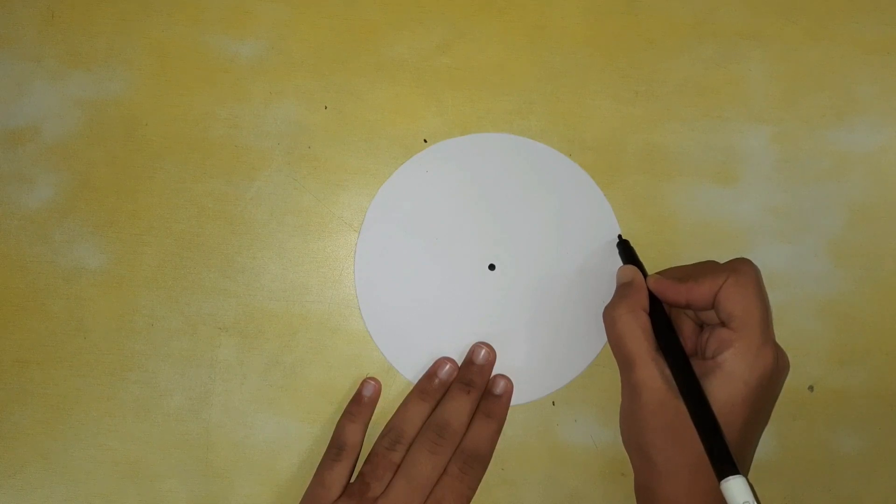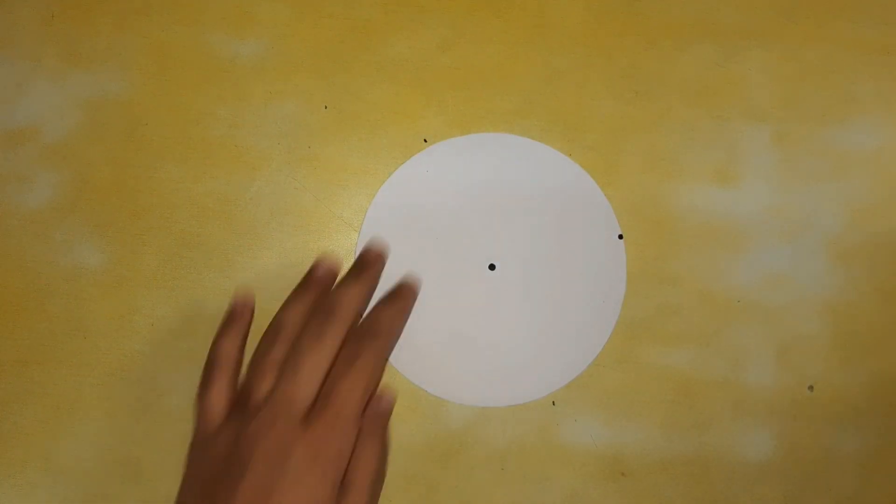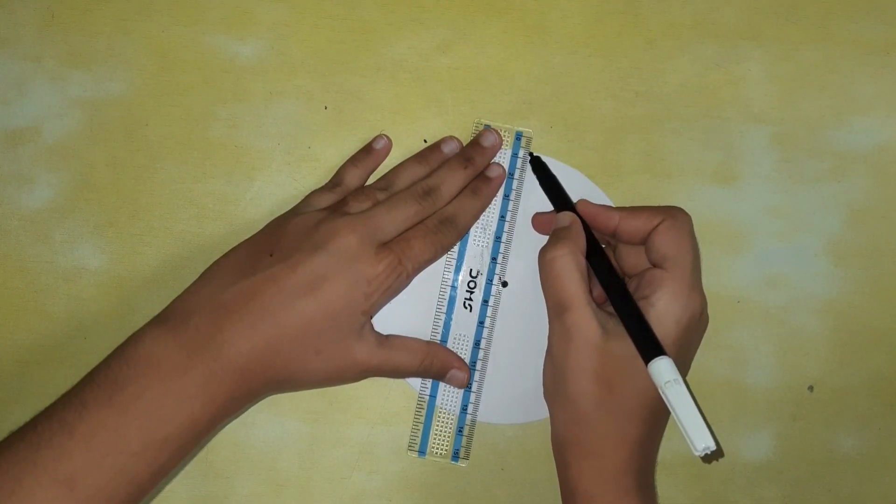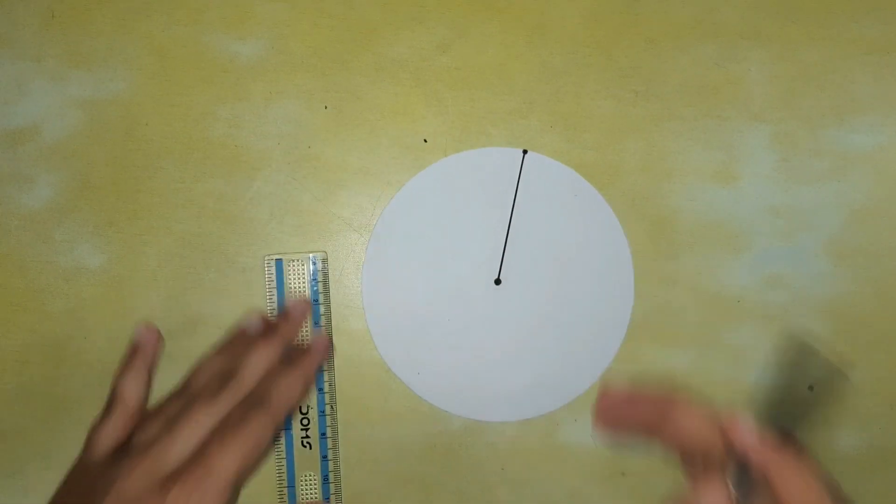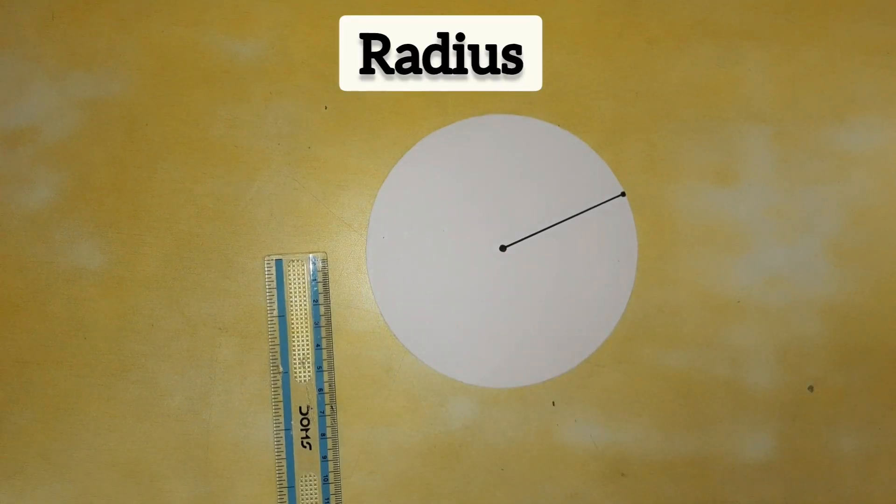Now let's take one more circle with a center point and take any point on the edge of a circle and draw a line to join this point. This line is called the radius of this circle.